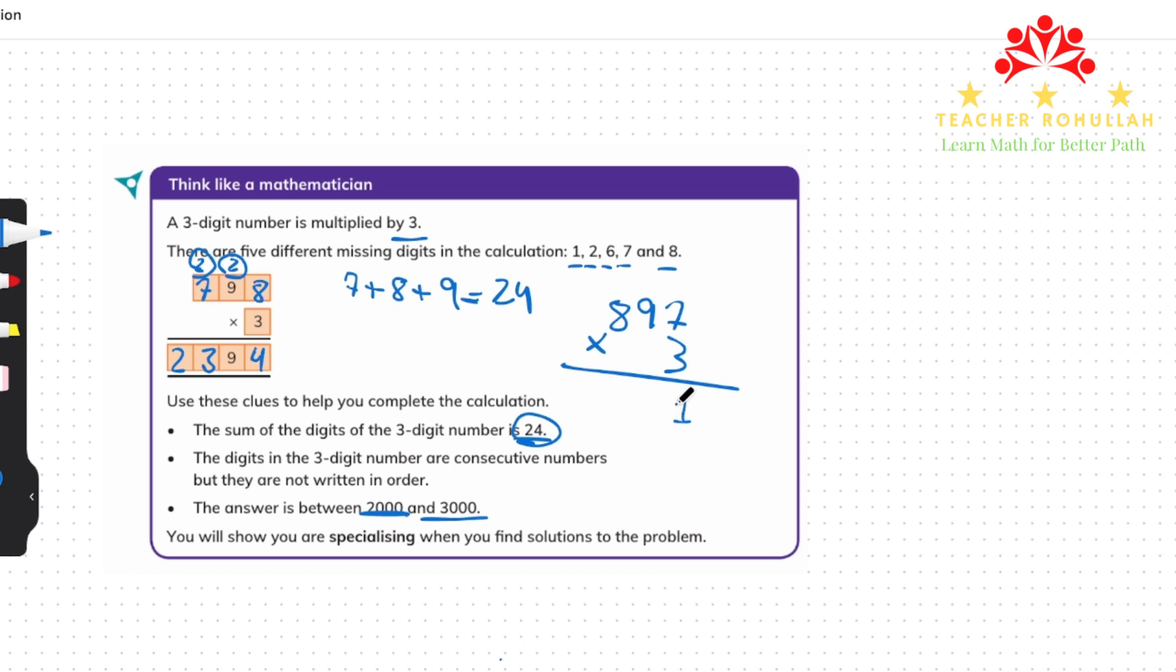So now 3 times 7 is 21. We write 1 here and carry 2 above the tens place. 3 times 9 is 27, 27 plus 2 is 29. And 3 times 8 is 24, 24 plus 2 which is carried here is 26. Now the answer is correct.